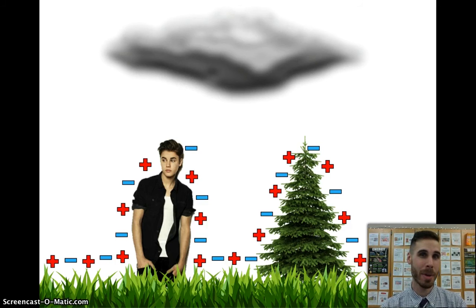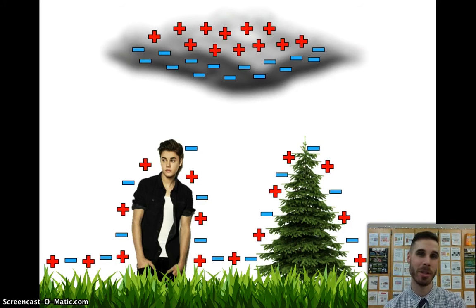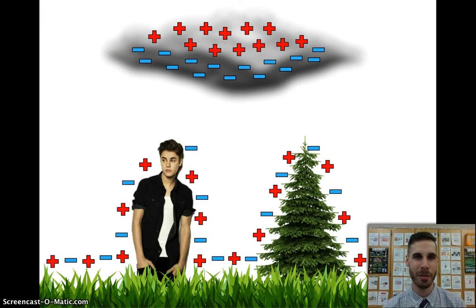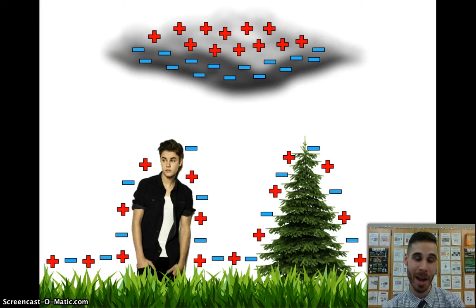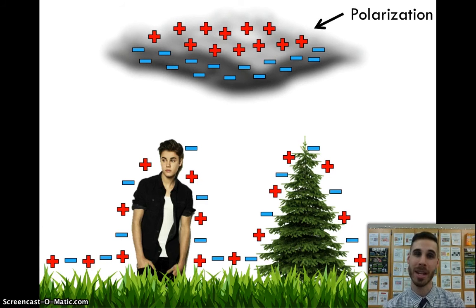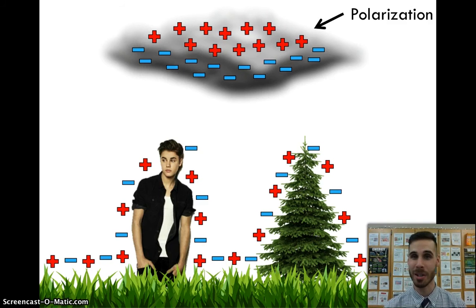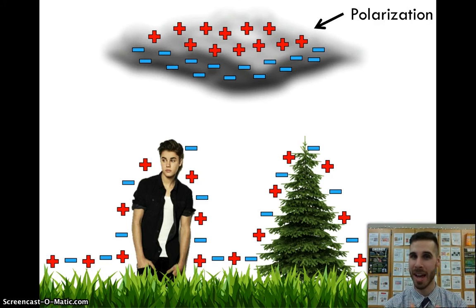Now the cloud is also made out of protons and electrons, but there's something interesting that happens in storm clouds because of humidity and mixing air pressures and all kinds of interesting meteorological phenomena that we're not going to get into right now. And that thing that happens is called polarization, which means you've created poles, or two opposite sides that do opposite things. So a storm cloud is polarized, which means all of the electrons end up being built up on the bottom of the cloud.